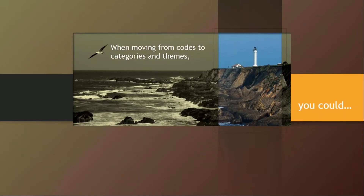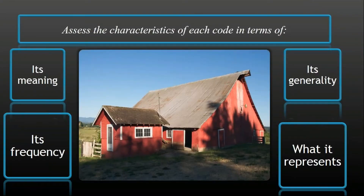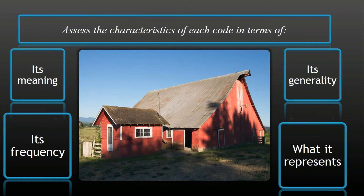So after developing codes, what do you do next? Your first step is to assess the characteristics of each of the codes in terms of its meaning, its frequency, its generality, and what it represents. These are the four areas you're going to look at when assessing each code. This means you want to get more understanding of the codes you have generated and see whether you'll be able to identify similarities among them so that you can start the categorization, grouping, or sorting process.